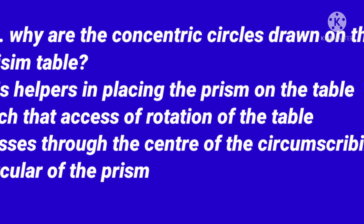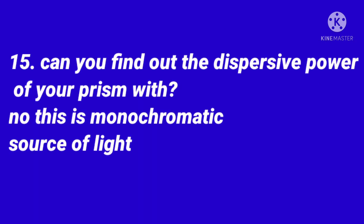Why are concentric circles drawn on the prism table? Because these circles help in placing the prism on the table such that the axis of rotation of the table passes through the centre of the circumscribing circle of the prism. Can you find out the dispersive power of your prism with monochromatic light? No.